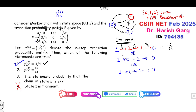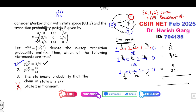For 1→0→1→0: P(1→0)=3/4, P(0→1)=1/2, P(1→0)=3/4, giving 9/32. The final answer: 3/64 + 9/32 + 9/32. With LCM 64: 3 + 18 + 18 = 39/64. So the second option is also a correct answer. This is the first method.